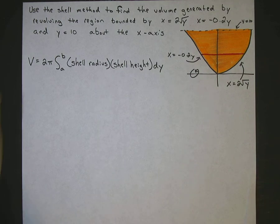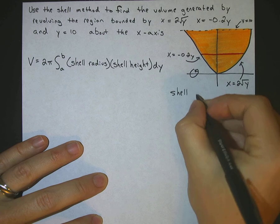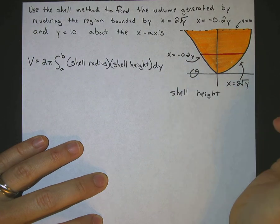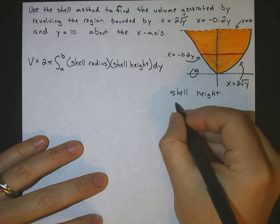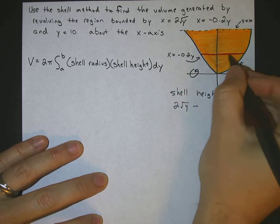Okay, and to figure that out, the shell height, we would subtract this right function minus the left function. So the shell height is going to be 2 square roots of y minus this one.